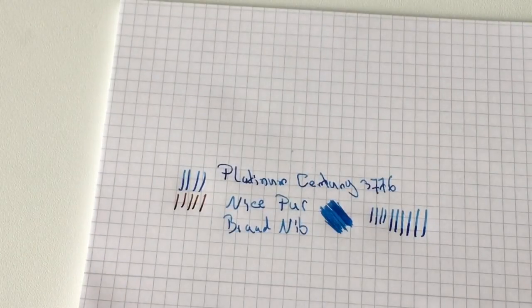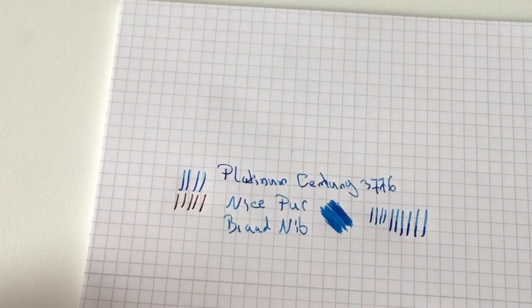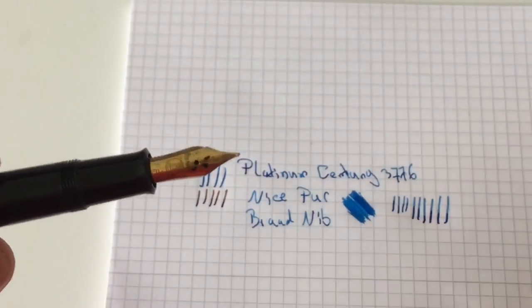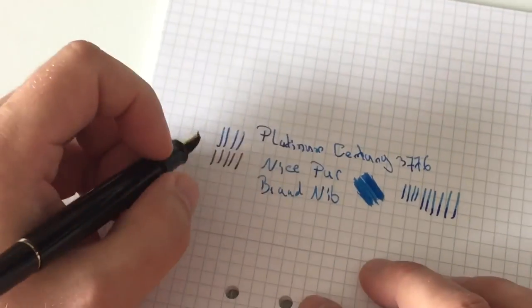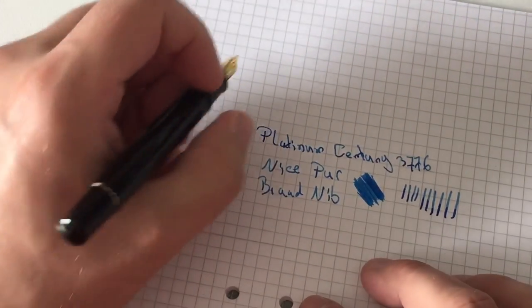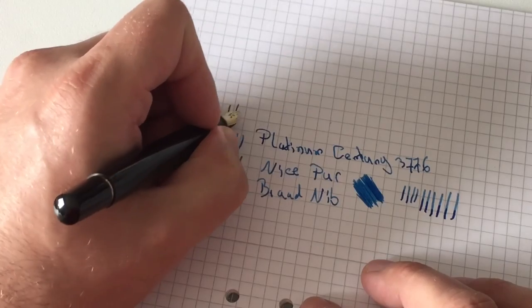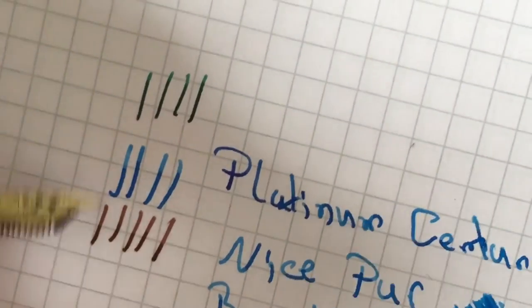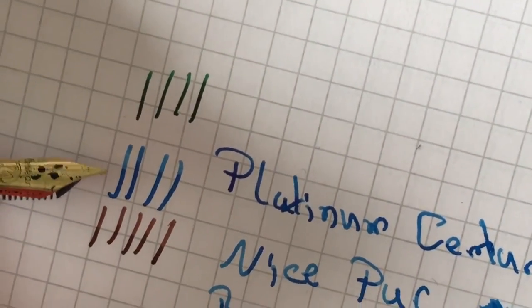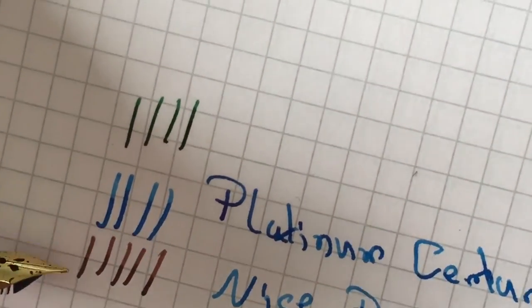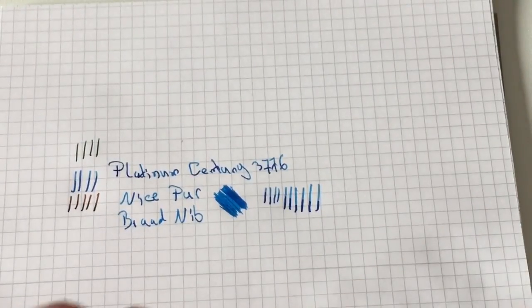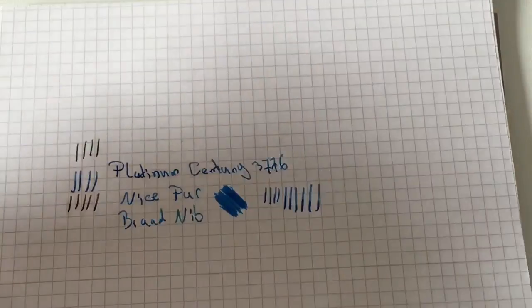Let's see if I have another pen here. I have a Pelikan M200 here that has a fine nib, and I can maybe do the same up here. This is a pretty true fine, I would say, and you see that it is finer. So I think it's fair to say that this Platinum broad compares to a Western medium.